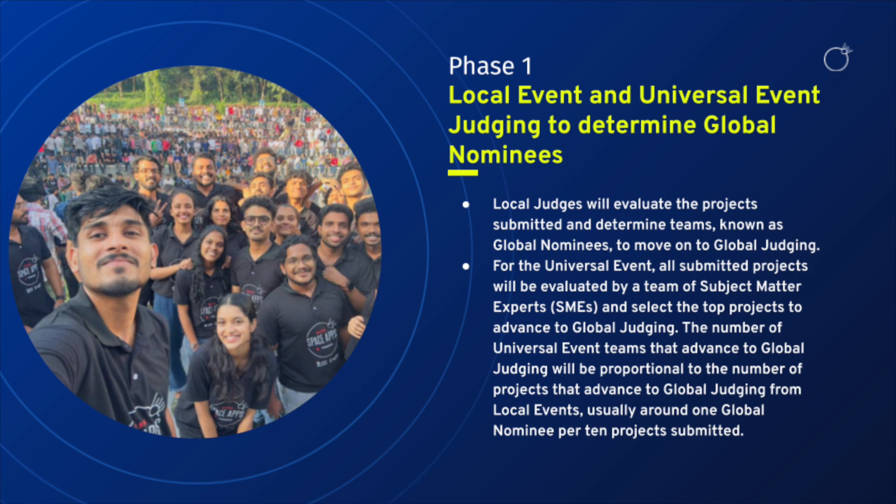The teams that win local prizes will not necessarily be the same teams that advance to global judging — this will be determined by the panel of local judges. For the universal event, projects submitted will be evaluated by a team of subject matter experts who will select the top projects to advance to global judging. The number of universal event teams that advance will be proportional to the number of projects advancing from local events, usually around one global nominee per 10 projects submitted.